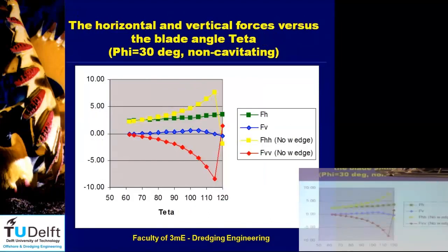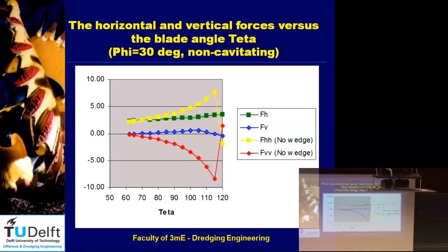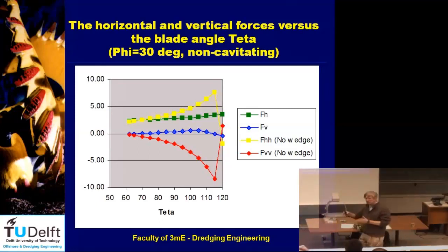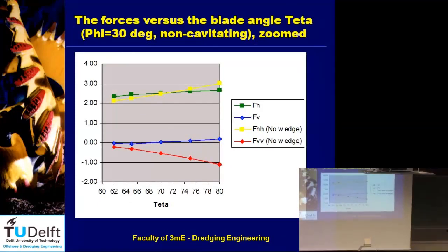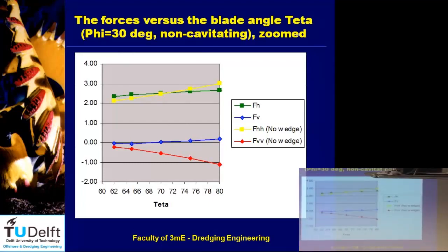Here you see the forces for the 30-degree case — the same picture as before, but now the intersection between the two lines is at a bigger blade angle. If the angle of internal friction is smaller, for a longer time you will have the original cutting model, and the wedge will start at a higher blade angle. The close-up shows up to about 70 degrees, no wedge; above 70 degrees, you will have a wedge.